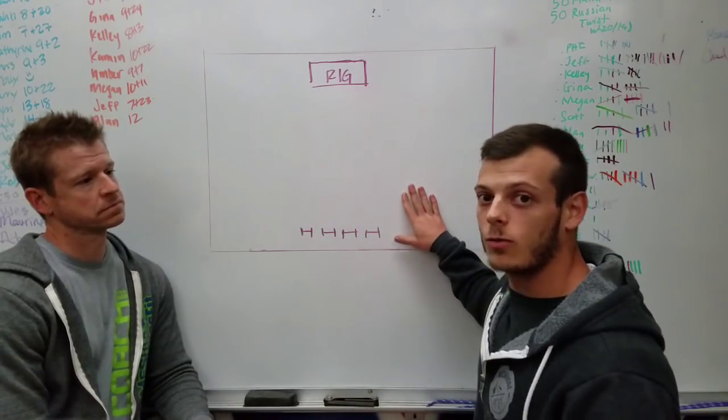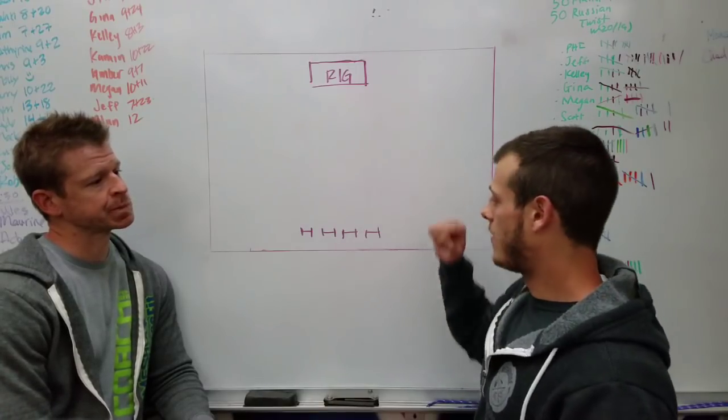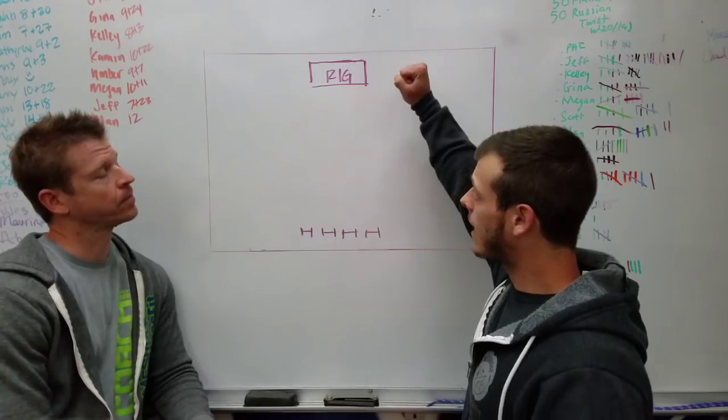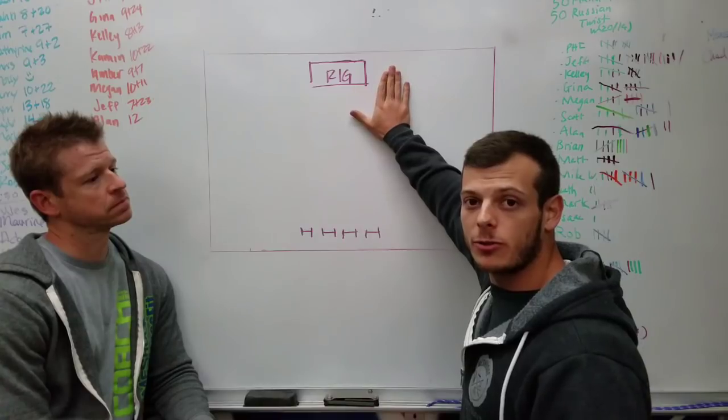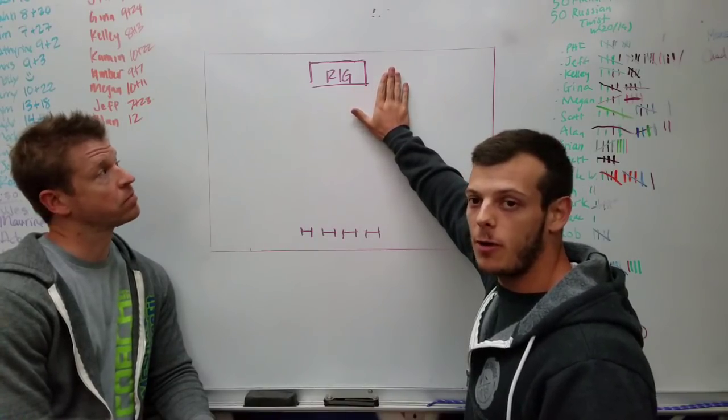But just for a layout, what we got going on, we have a rig set up at one end of the field, and then we got barbell set up down at the other end of the field. The workout goes, you're going to have 80 synchronized toes to bar, only two people need to be doing those synchronized. It's going to have to be male-female pairs.